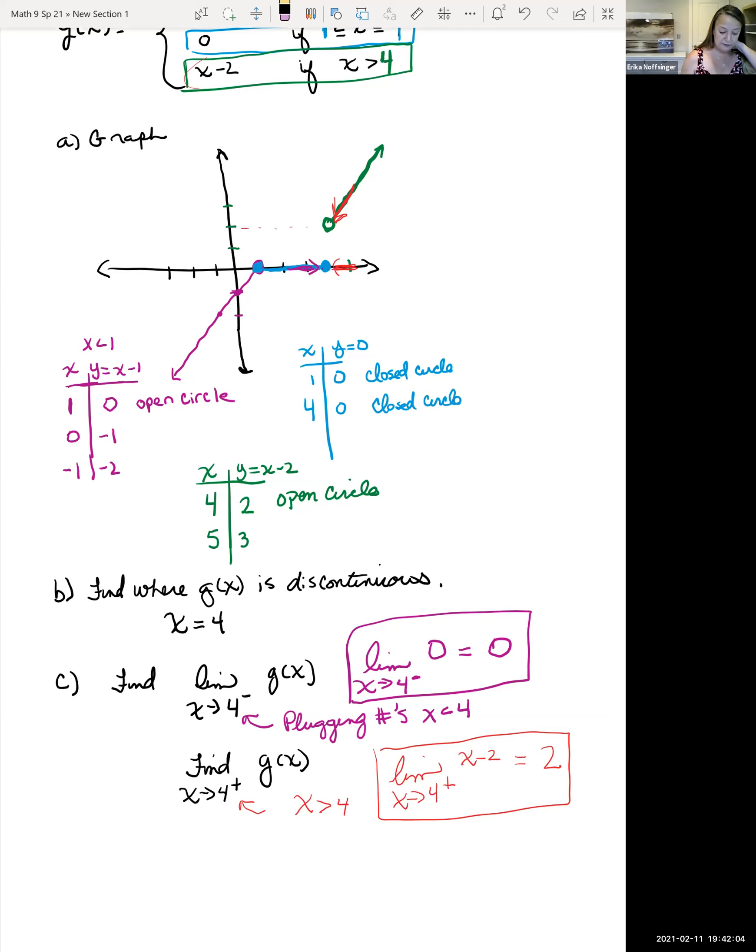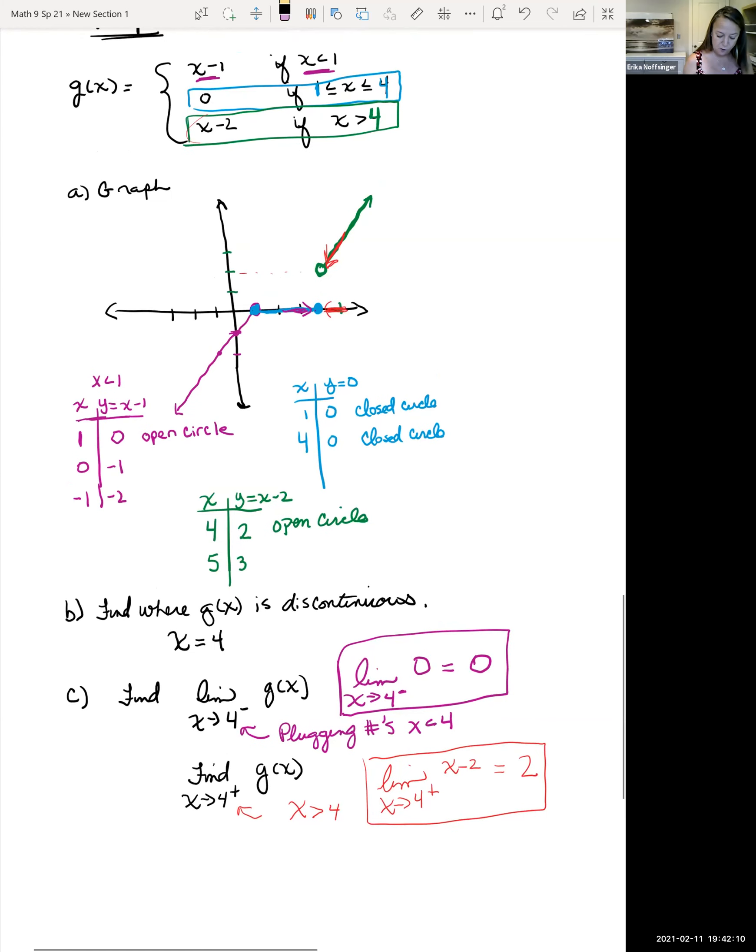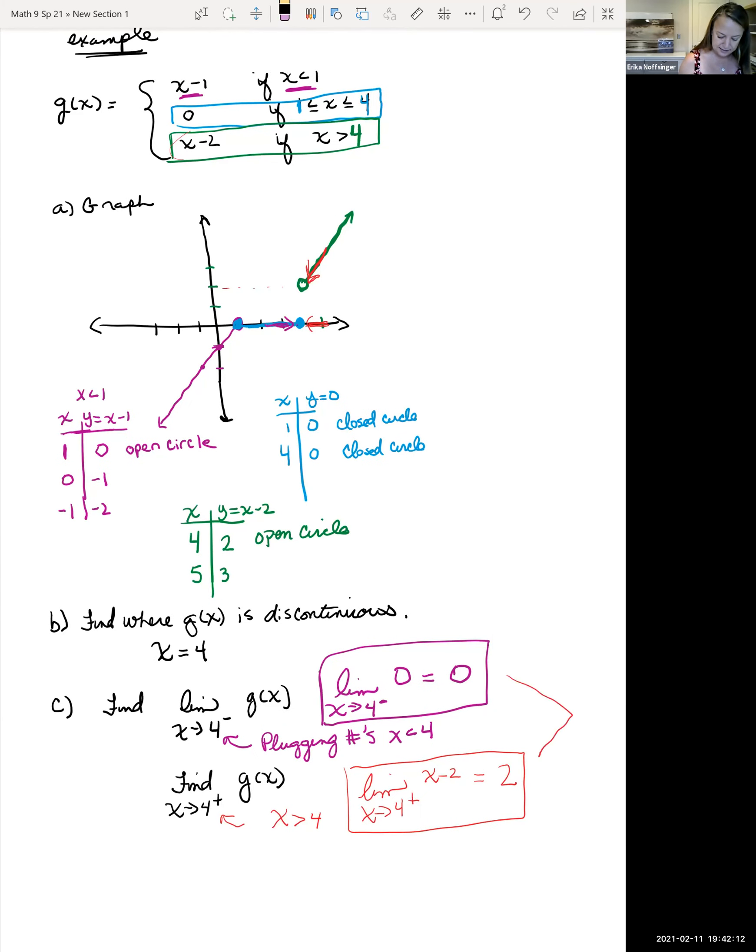So if we had to explain why this was discontinuous at x equals 4, it's because the limit does not exist. So the condition that the limit has to exist doesn't hold.